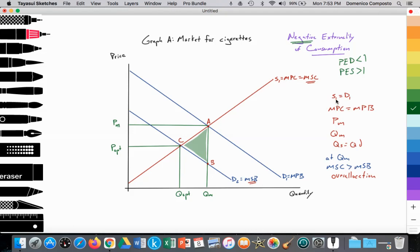In the free market, where S1 equals D1, or where MPC equals MPB, marginal private cost equal to marginal private benefit, it provides a free market equilibrium price at PM and free market equilibrium quantity at QM, where quantity supplied equals quantity demanded. But we notice that at QM, the marginal social cost at point A is greater than the marginal social benefit at point B, meaning that there's an overallocation of resources to the production and consumption of this good. Society would like less consumption of cigarettes.